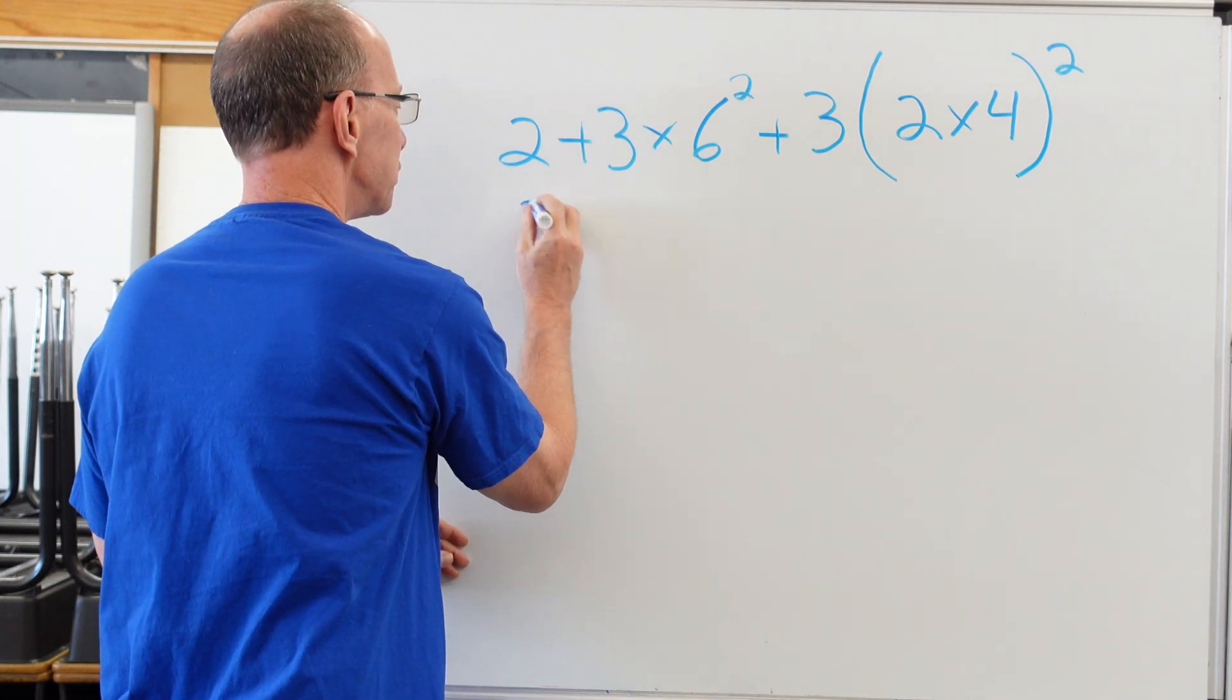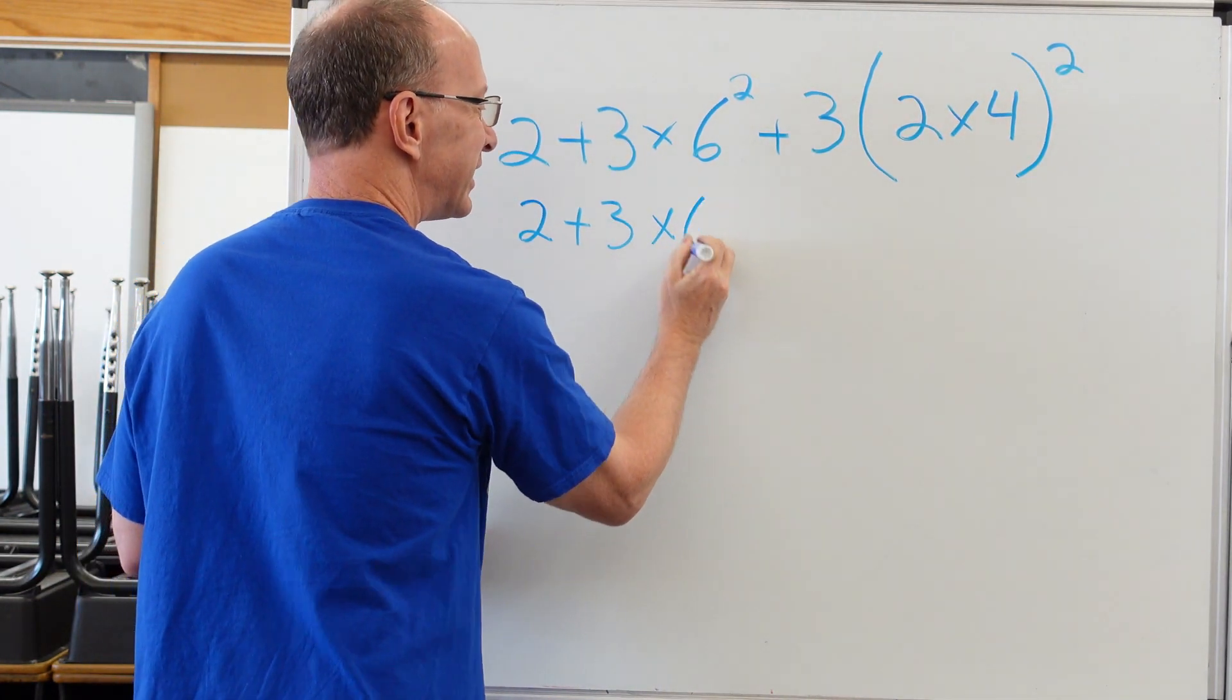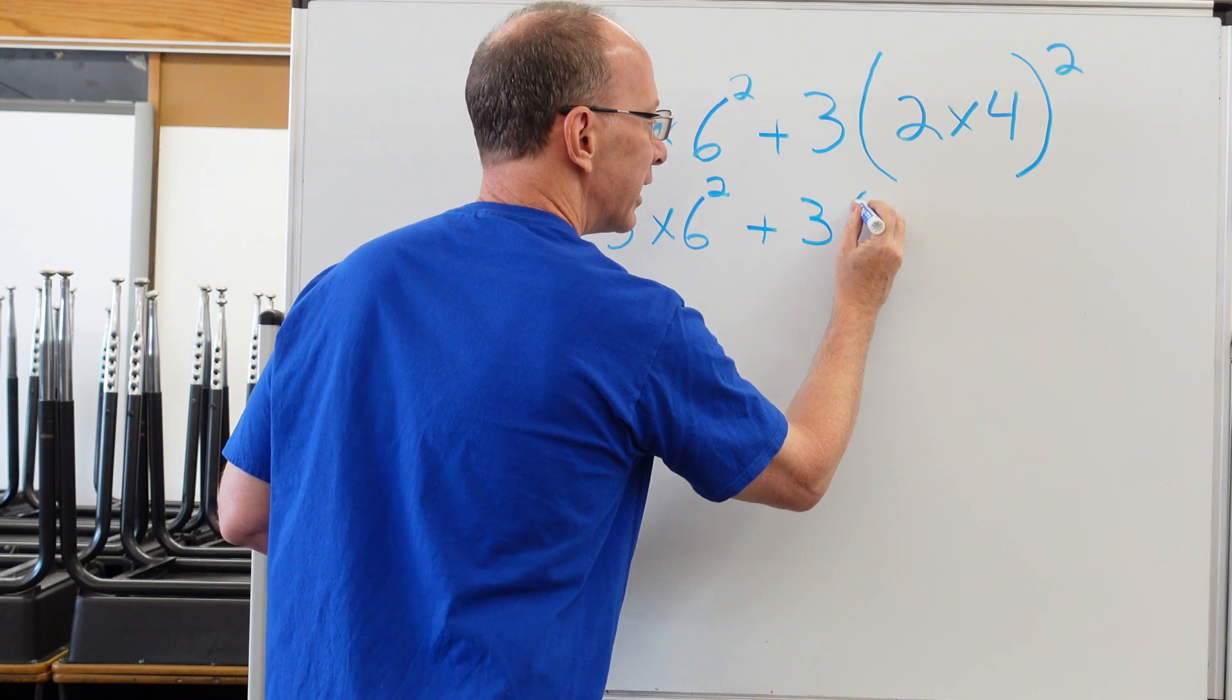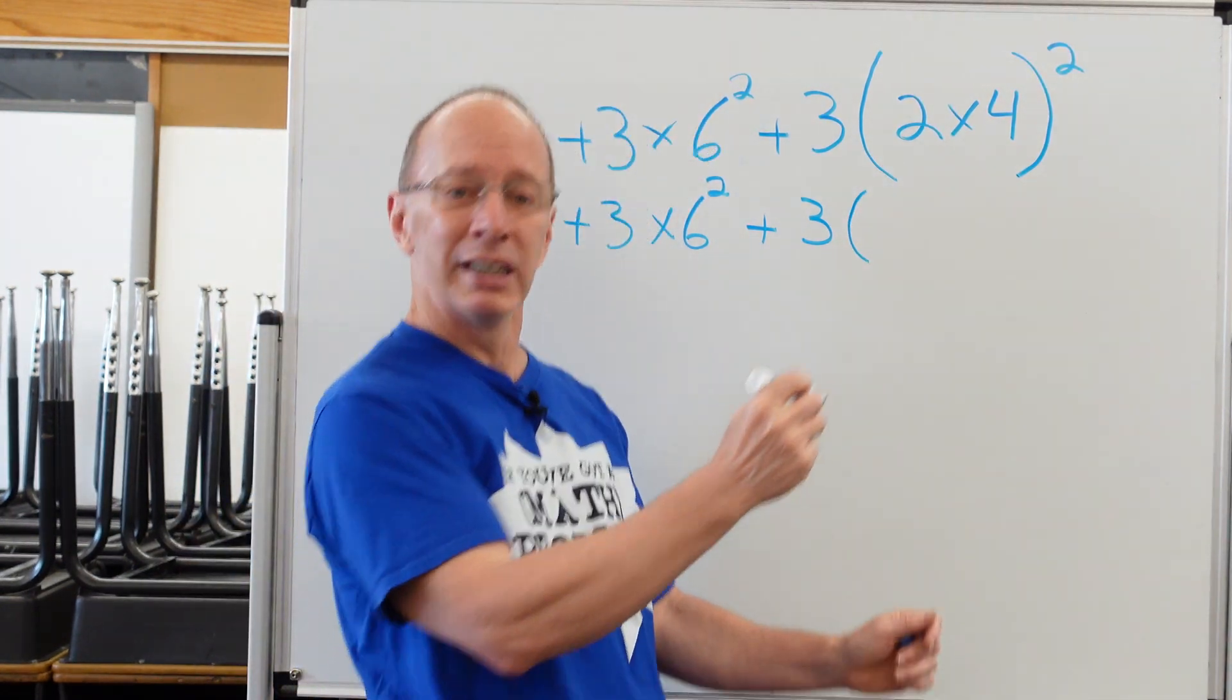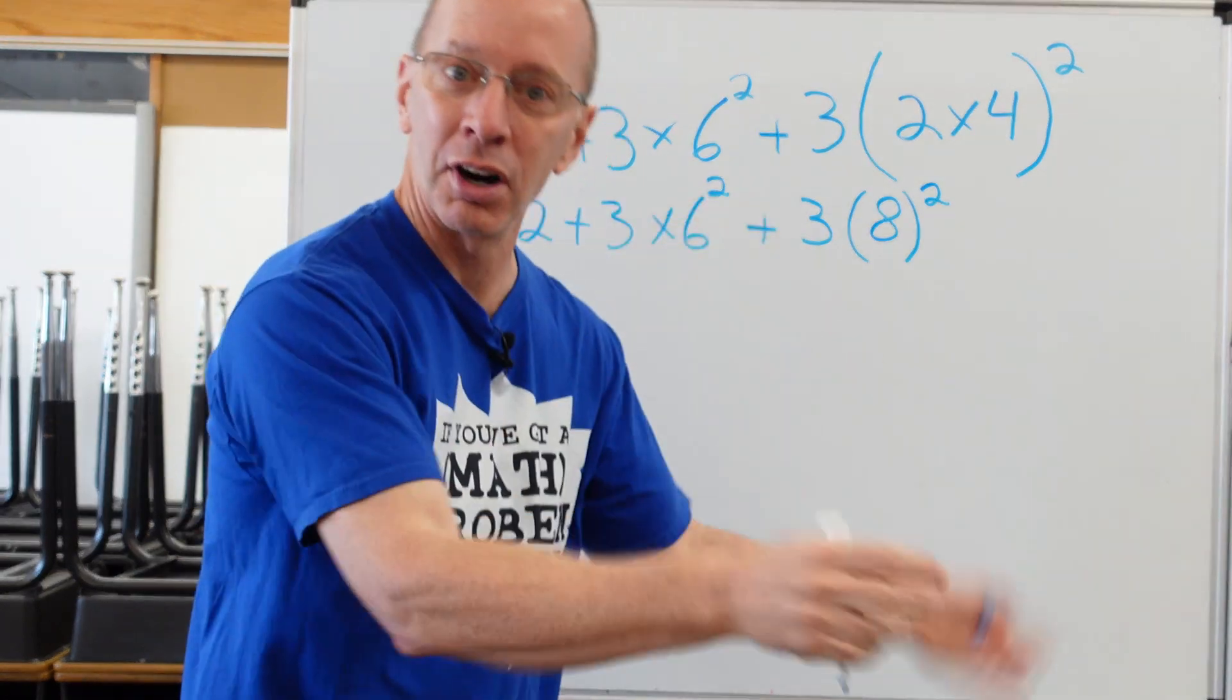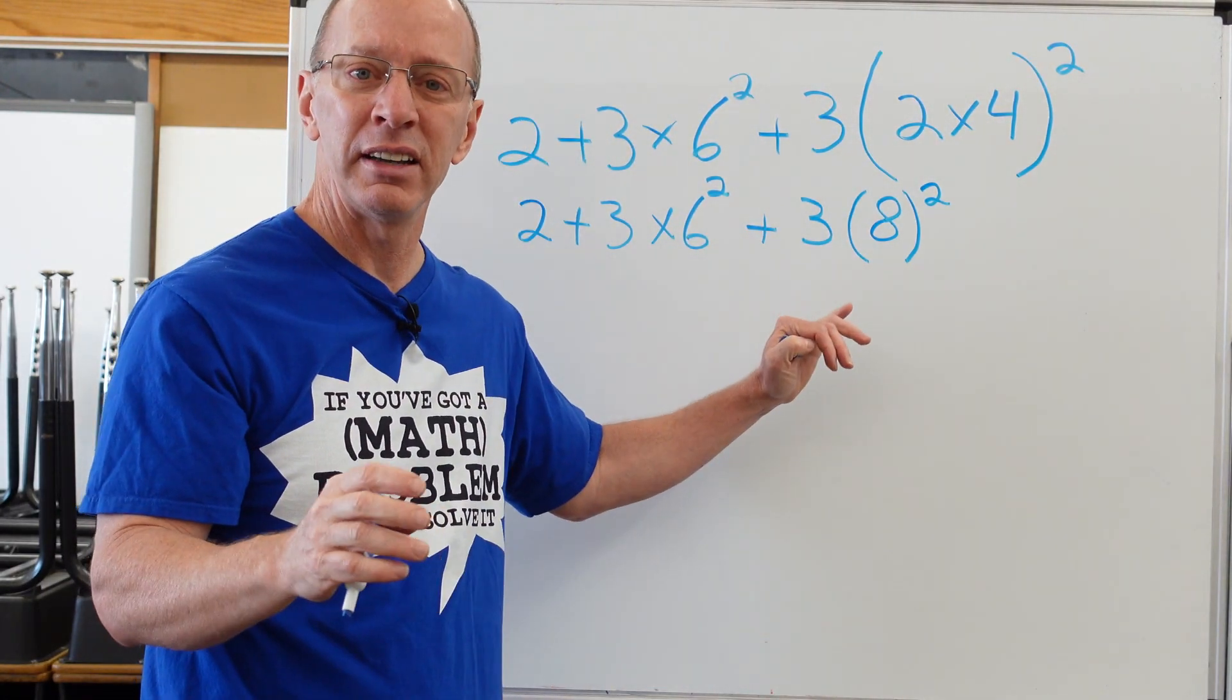I'm going to rewrite this: 2 + 3 × 6² + 3, and then we do our parentheses. Two times four is eight, put the eight right here, put the parentheses here and then the exponent.